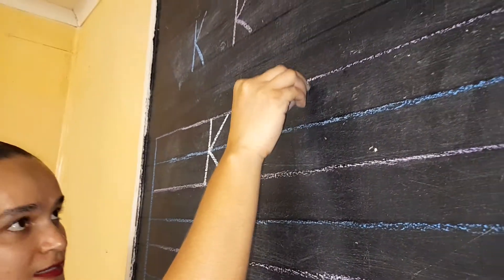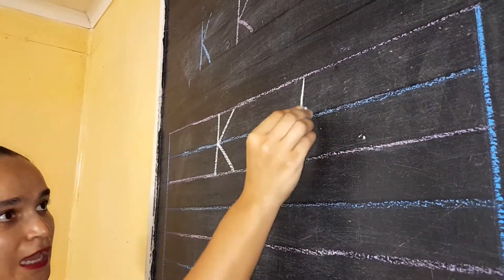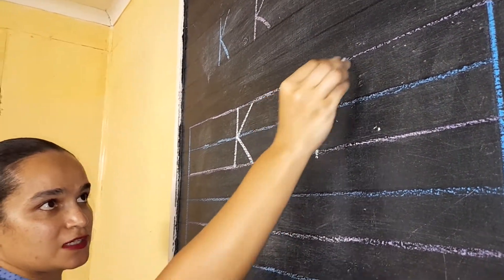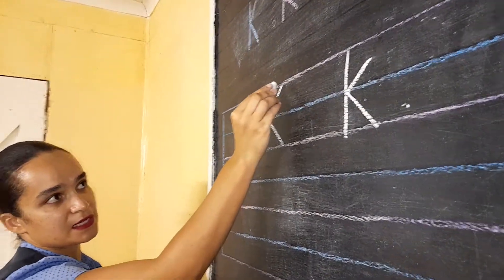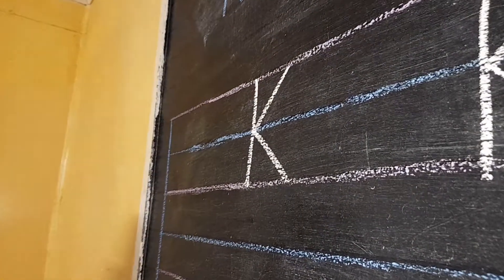Small letter K. Down and then just to the middle. It does not touch the top and then down. Let's look at the difference. Big letter touches the top. Small letter does not touch the top.